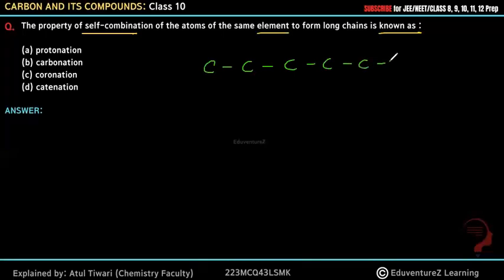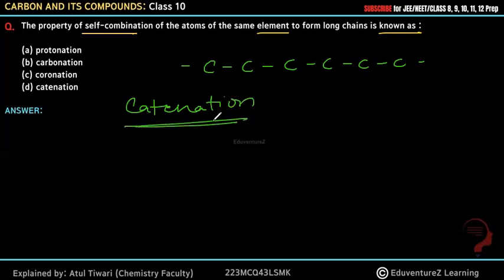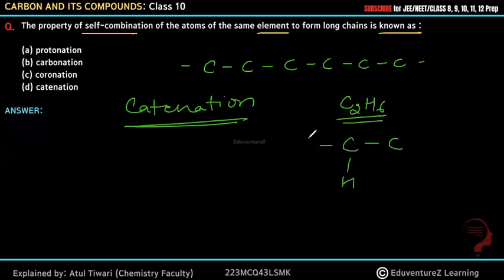The property of self combination of the same element to form a long chain — this property happens to be associated with carbon, which can form chains through self combination.